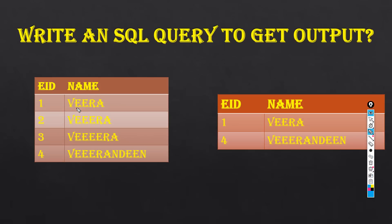Specifically, they want data which contains only double e's, and it should not be followed with any additional 'e'. For example, in 'vera', double 'e' is present and after that it is followed by characters other than 'e'. But in other rows, you see additional e's — they don't want those in the output.